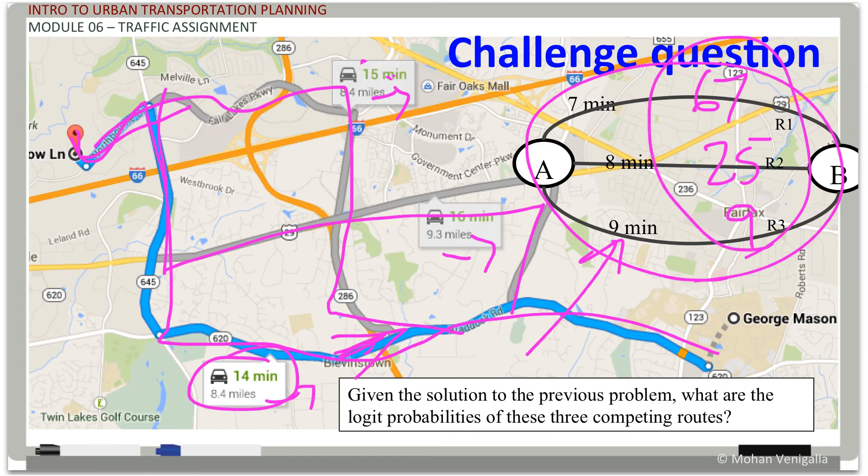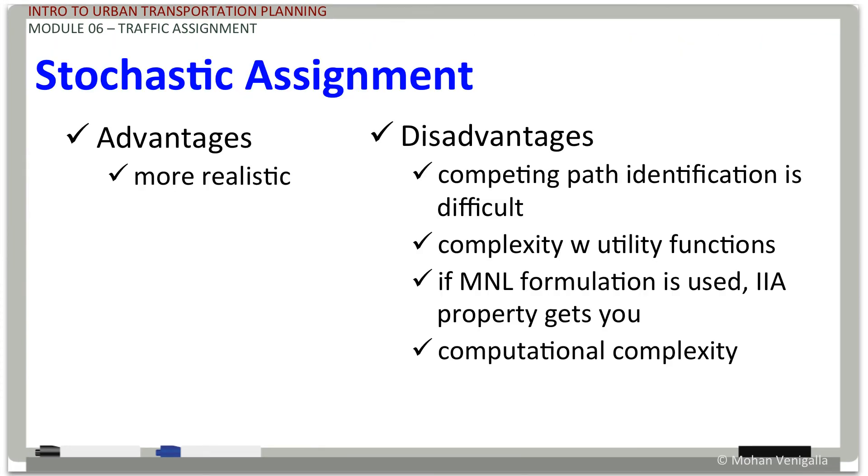And your probabilities on this particular real world scenario are going to be 67, 25, and 9. It's that simple. So, now, advantages and disadvantages. It's very realistic. This is how things work in real life.